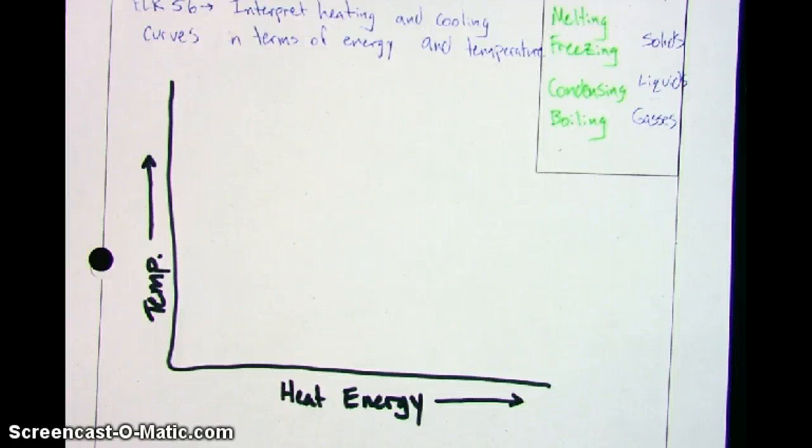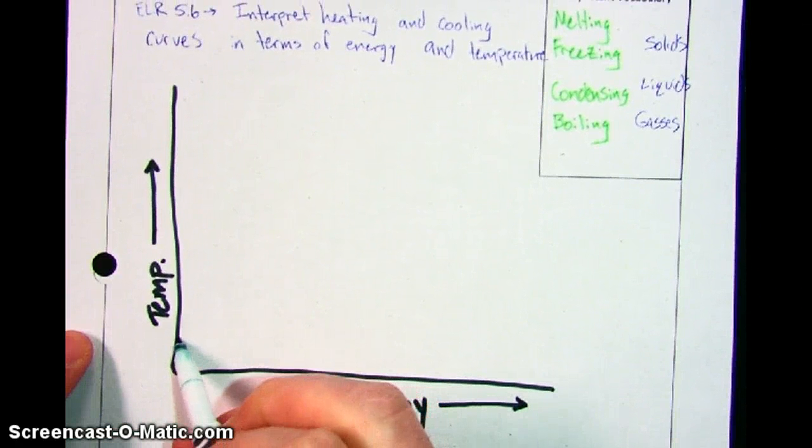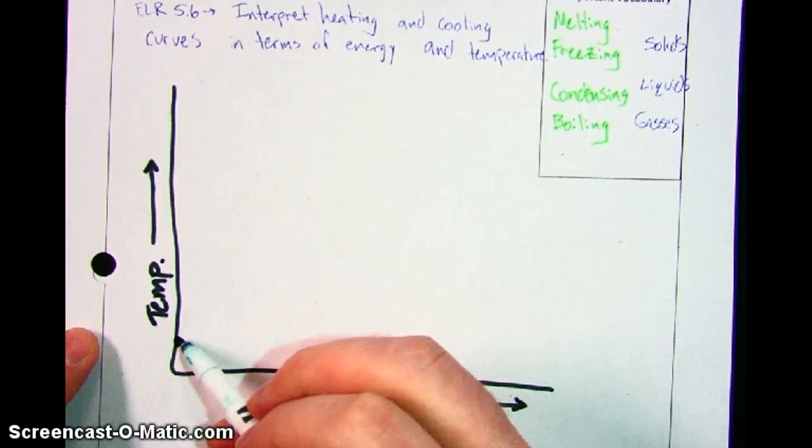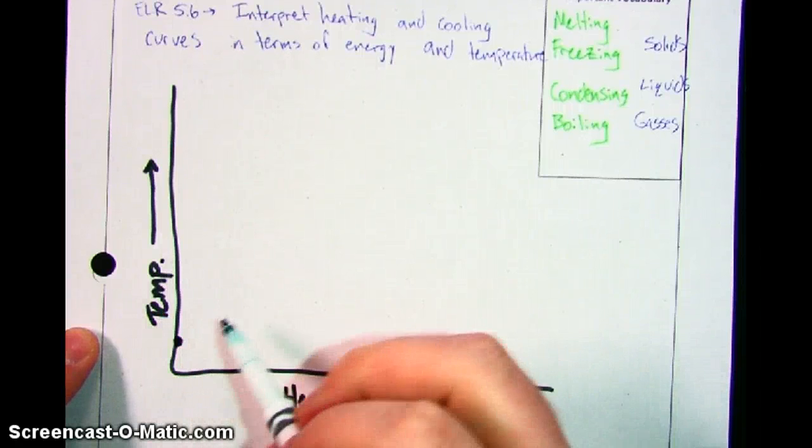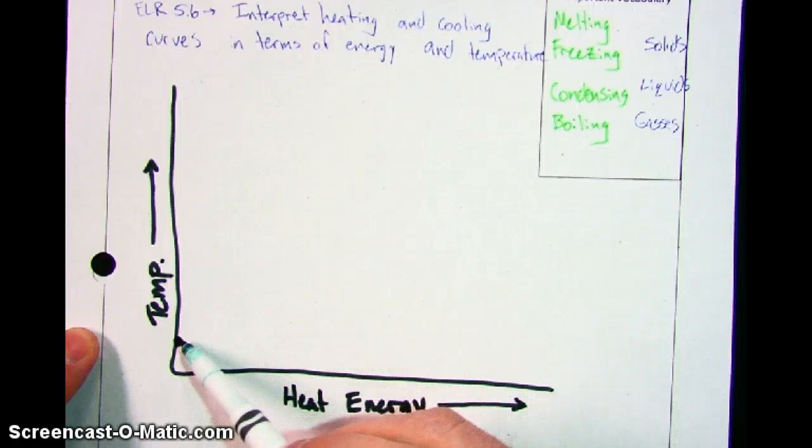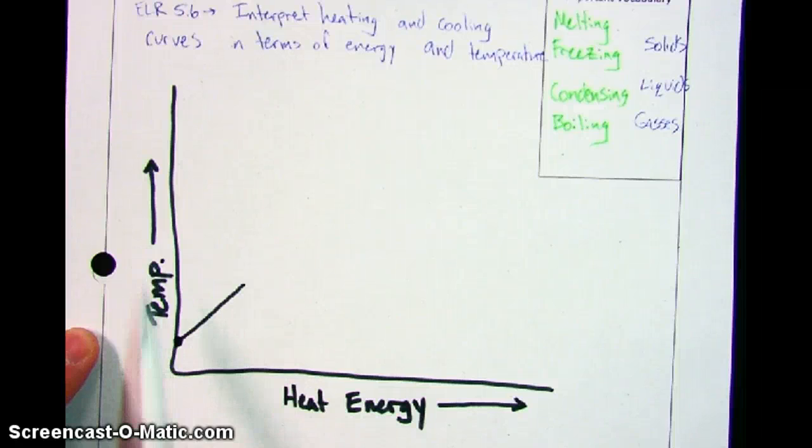Now, we're going to start on this graph down on the low energy, low temperature side. So, we're talking about some point that exists right here. If we're down on low heat energy, low temperature, we're talking about a solid. If you remember back to that time when we all simulated a solid in class where I handed out the poker chips, as you increase the energy, you can still stay a solid, and your temperature is rising.